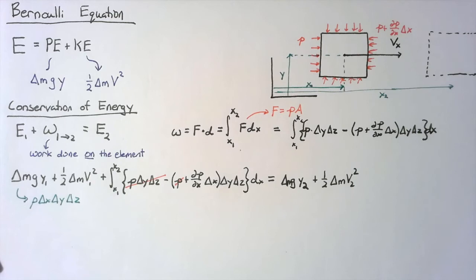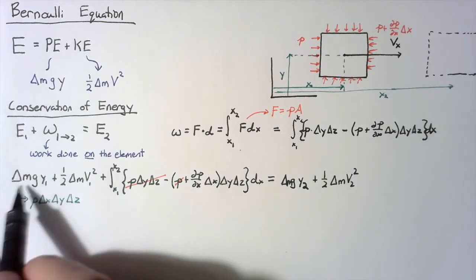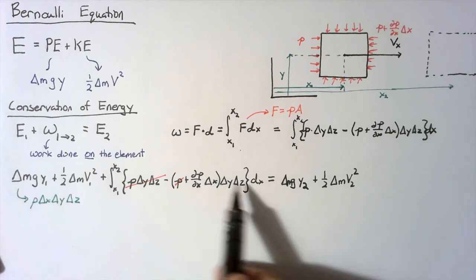So we can actually get rid of all of the deltas here as well. Then these delta m's just become rhos, and this gets much simpler.